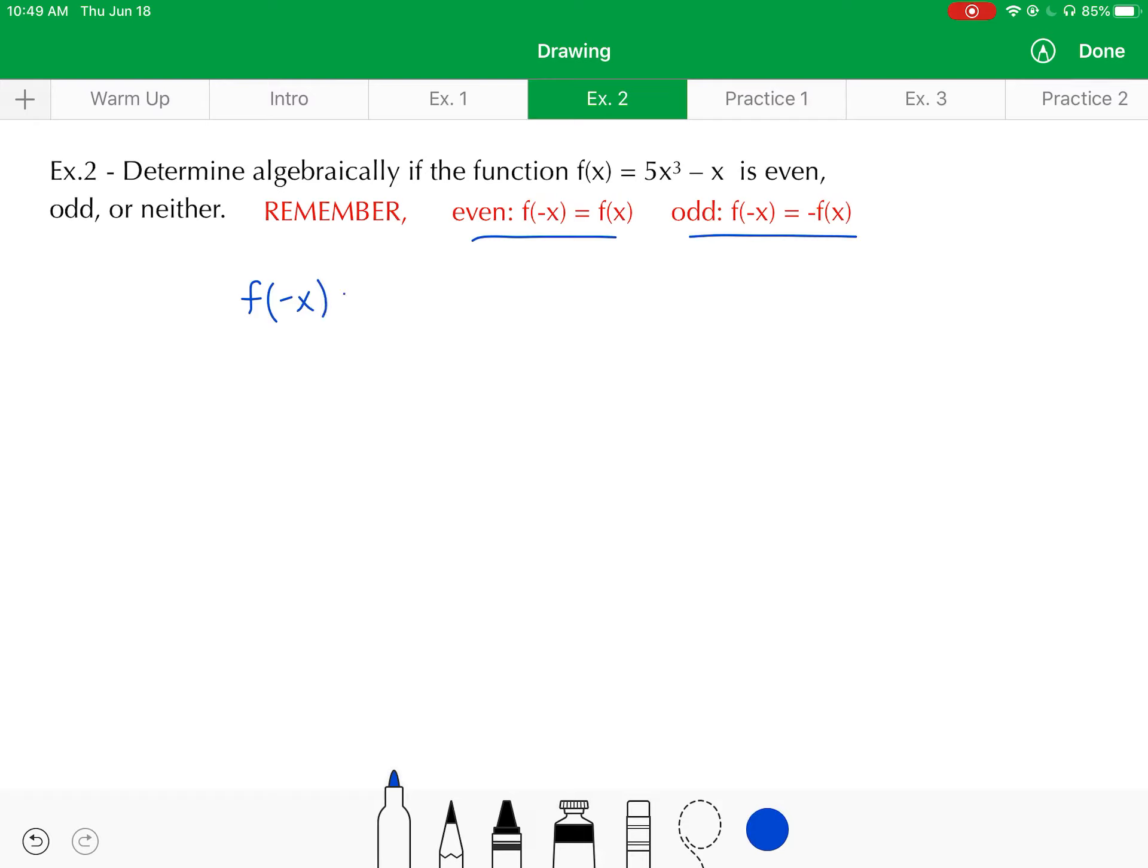Which just requires you to have a really good understanding of function notation. f of negative x, in this case, means to find 5 times the negative x cubed minus the negative of x. Notice I'm using parentheses when I evaluate the function with negative x here. I have parentheses around anywhere I inserted negative x into the function. That's very important. Now, simplify this with order of operations.